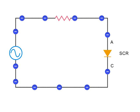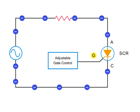This is accomplished by manipulation of the adjustable gate control. This gate control function determines when and how much the SCR conducts.